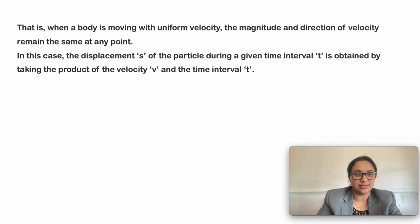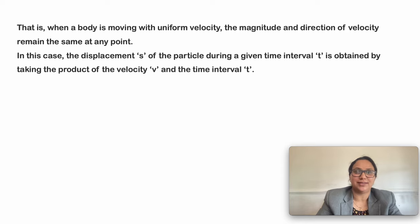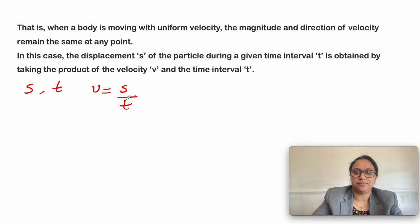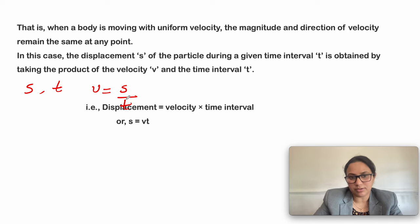As we discussed, when a body is moving with uniform velocity, the magnitude and direction of velocity remain the same at any point. Suppose S is the displacement of the particle during a given time interval t, then velocity is calculated using the formula: v equals displacement divided by time taken. Alternatively, displacement S equals velocity v multiplied by time t.